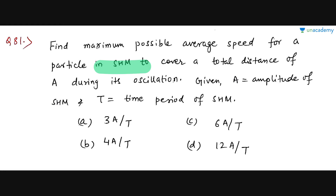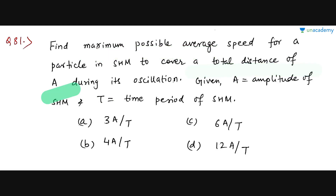In the next question, you have to cover a total distance of A. There will be many cases, and the question asks: when will the maximum possible average speed be achieved? This question is slightly trickier and a bit above NEET level, but the solution is not very difficult if you catch what is being asked and how to solve it.